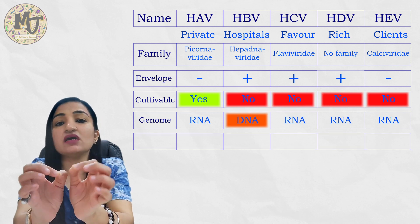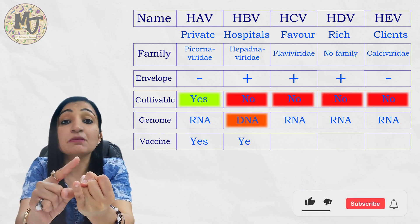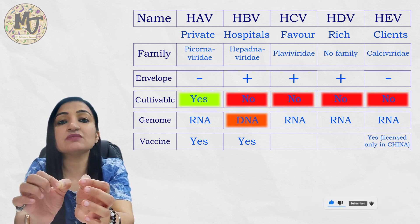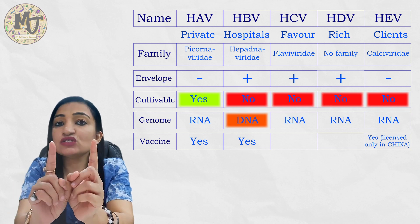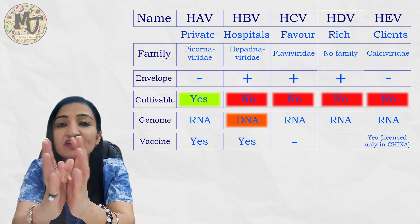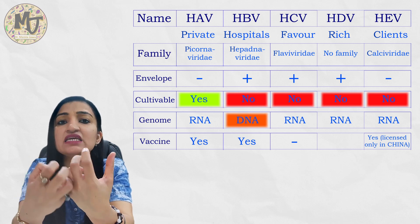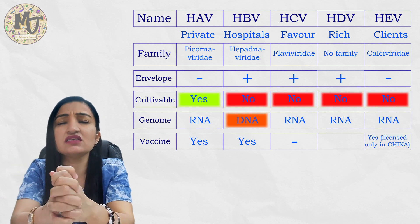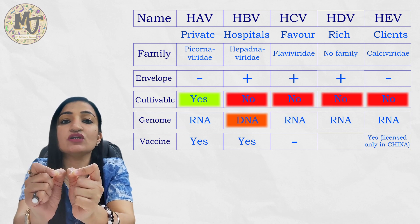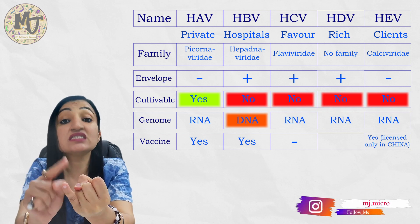Regarding vaccines: a vaccine is available against Hepatitis A virus and Hepatitis B virus. A vaccine against Hepatitis E virus also exists, but it has been licensed for use only in China. There is no vaccine against Hepatitis C virus because it shows a wide variety of glycoprotein antigens on its envelope — it is a highly variable, mutable virus and a classical example of antigenic variation, making vaccine development extremely difficult.